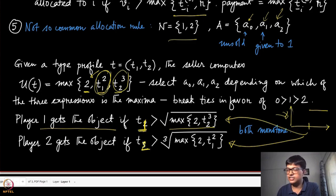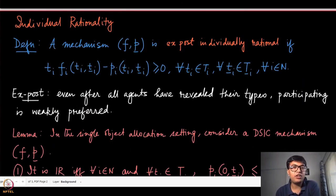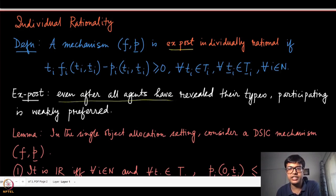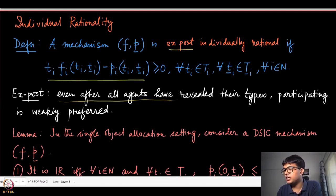Let us now look at the property of individual rationality. We emphasize the term 'ex-post' individually rational, which means that even after all agents have revealed their types, participating is weakly preferred. The definition is: the expected utility is non-negative for every type of your own and the types of the other players, and this should hold for every player.